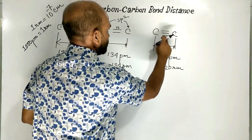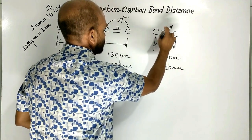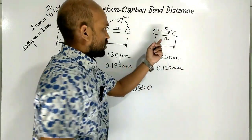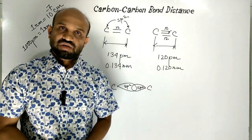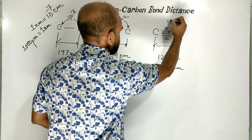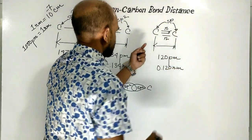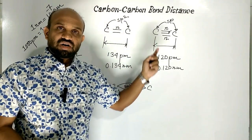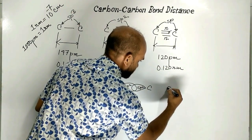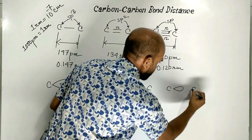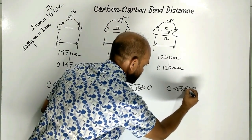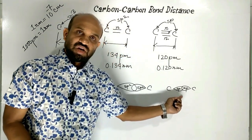In the case of a carbon-carbon triple bond, there are two pi bonds and one sigma bond. For the two pi bonds, two unhybridized p orbitals are required. Therefore, the hybridization here is sp. So in the case of a carbon-carbon triple bond, carbon atoms are sp hybridized. In this case, the orbitals are even smaller than sp3 orbitals.